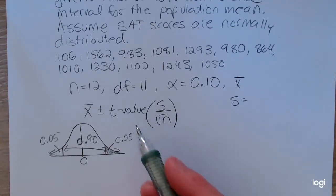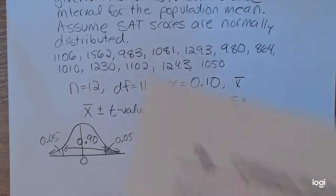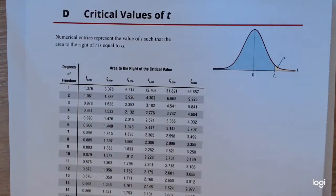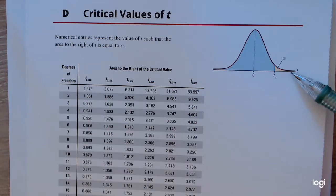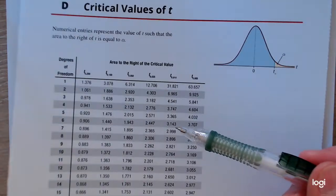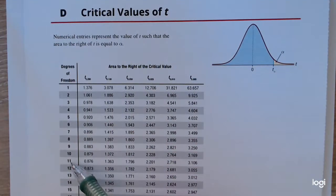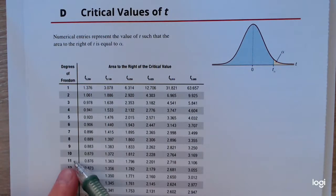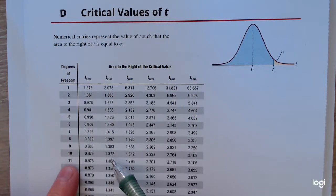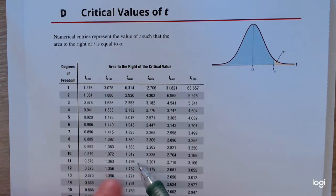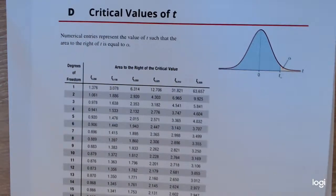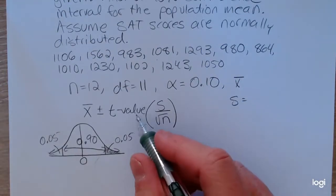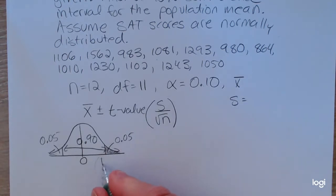So to find that T value, I can go to that T table. And this particular T table reads from the critical value, the upper critical value, to positive infinity. So I'm reading down to 11 degrees of freedom, and over to 0.05, and this print is very, very small. Okay, so 0.05, I have 1.796. So this piece right here is 1.796.